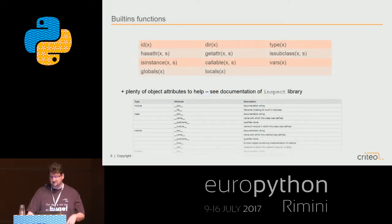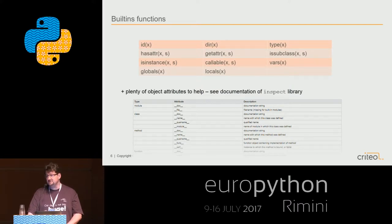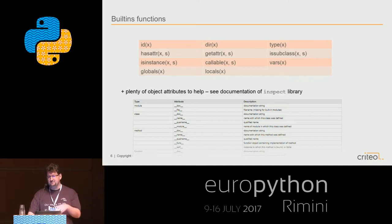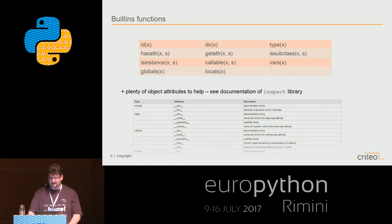Now let's look at what the standard library can offer, starting with the built-ins. There is a list of functions that can be considered introspection: id, to get the identity of an object; dir, providing the list of attributes and methods; type, providing the type; hasattr, getattr, relatively explicit; issubclass, isinstance, callable - providing information about specific characteristics of your object; as well as different functions for accessing variables depending on scope.